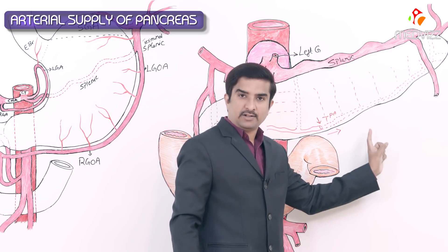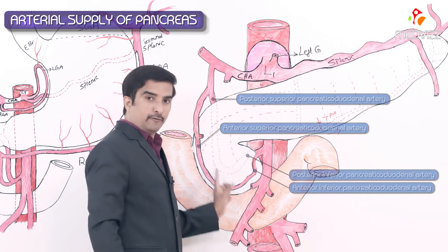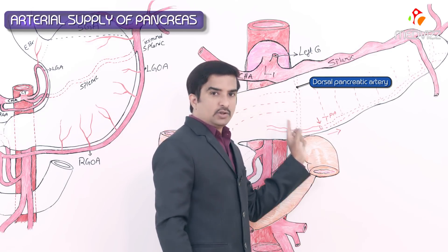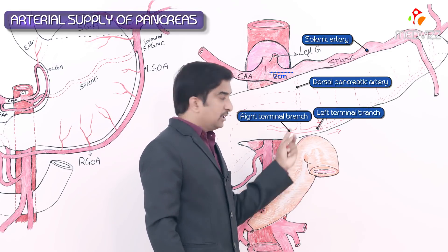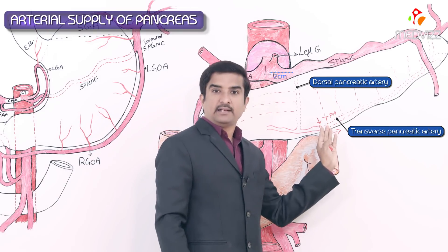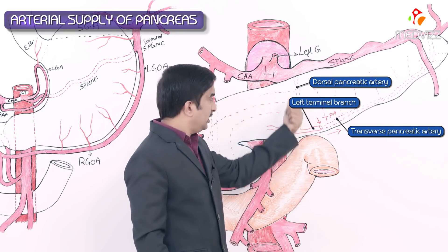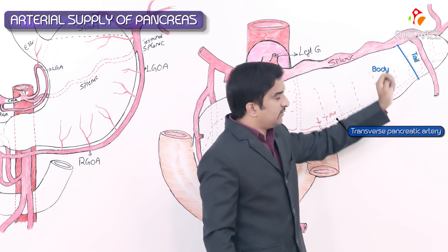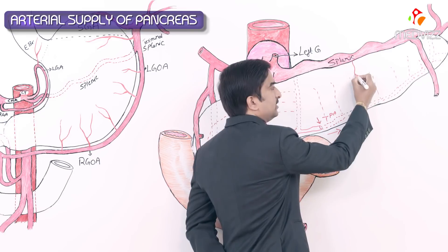To summarize so far: the anterior and posterior pancreaticoduodenal arcades are formed by four arteries — two from the celiac trunk and two from the superior mesenteric artery. The dorsal pancreatic artery arises from the proximal two centimeters of the splenic artery and divides into left and right branches, with numerous right branches supplying the neck and anastomosing with the arcades. The transverse (inferior) pancreatic artery arises from the left terminal branch of the dorsal pancreatic artery, runs posteriorly along the inferior border, and supplies the body and tail.